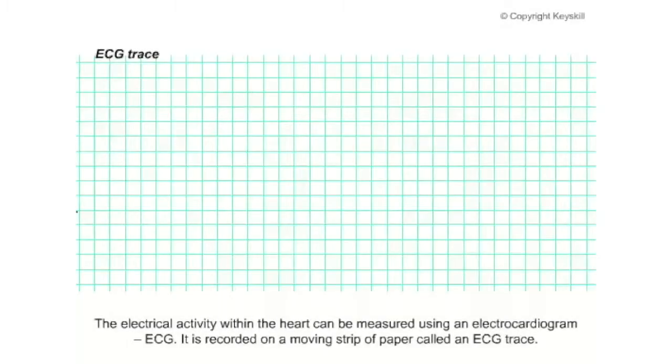The electrical activity within the heart can be measured using an electrocardiogram, or ECG. It is recorded on a moving strip of paper called an ECG trace.